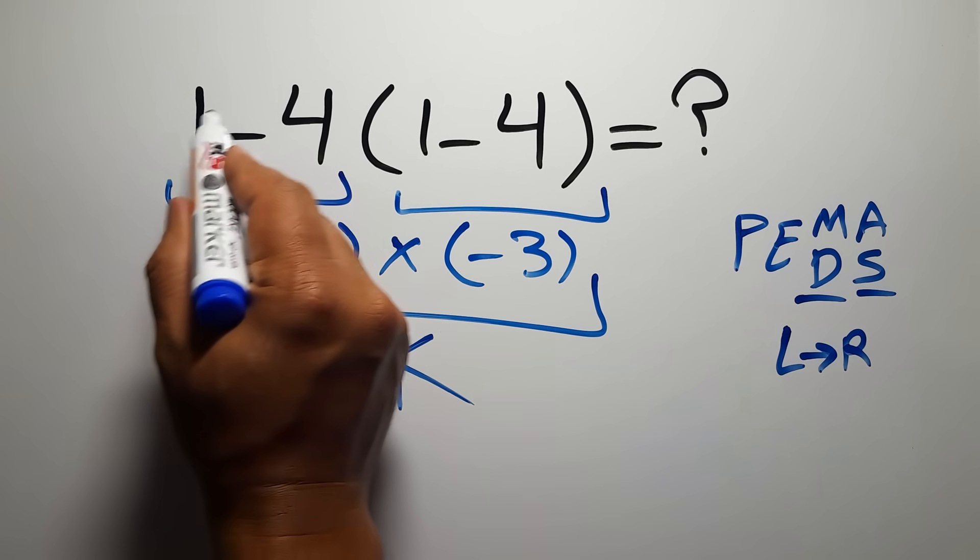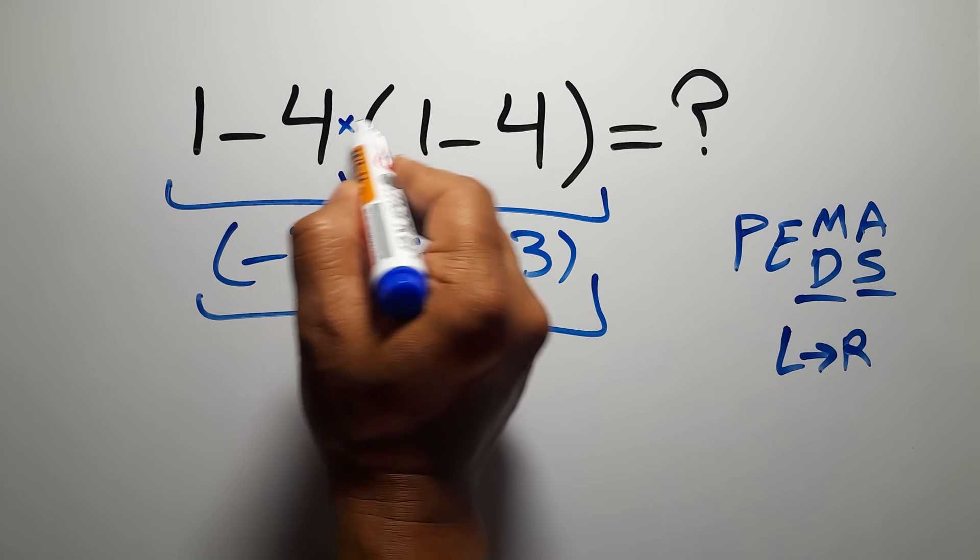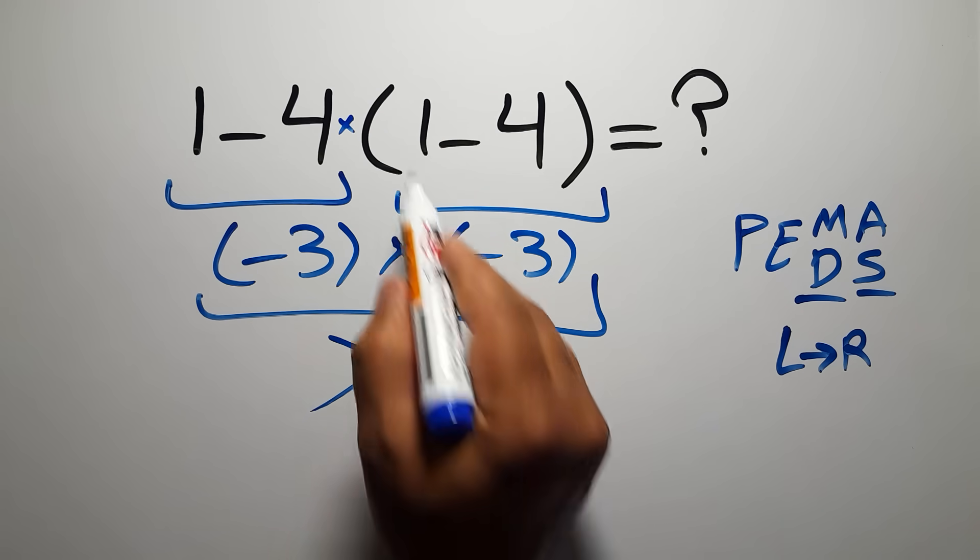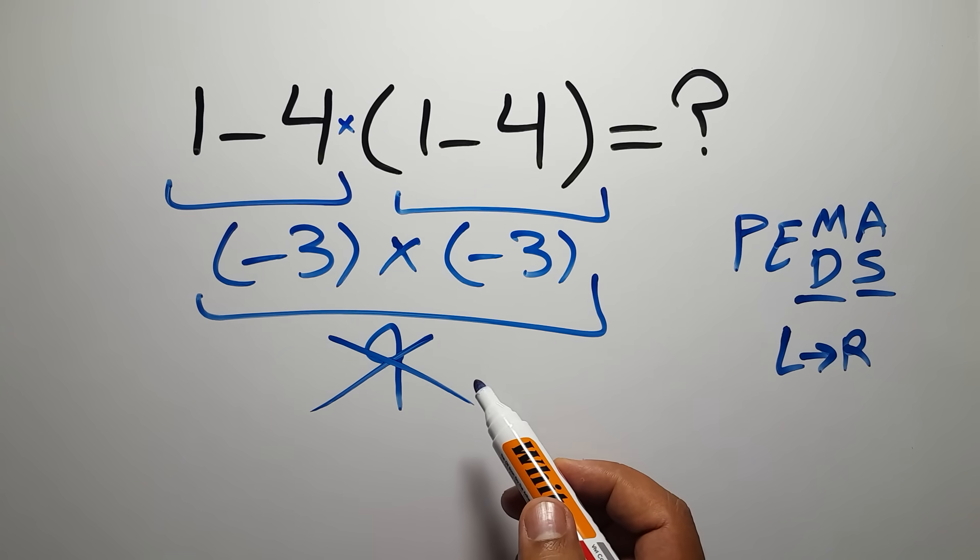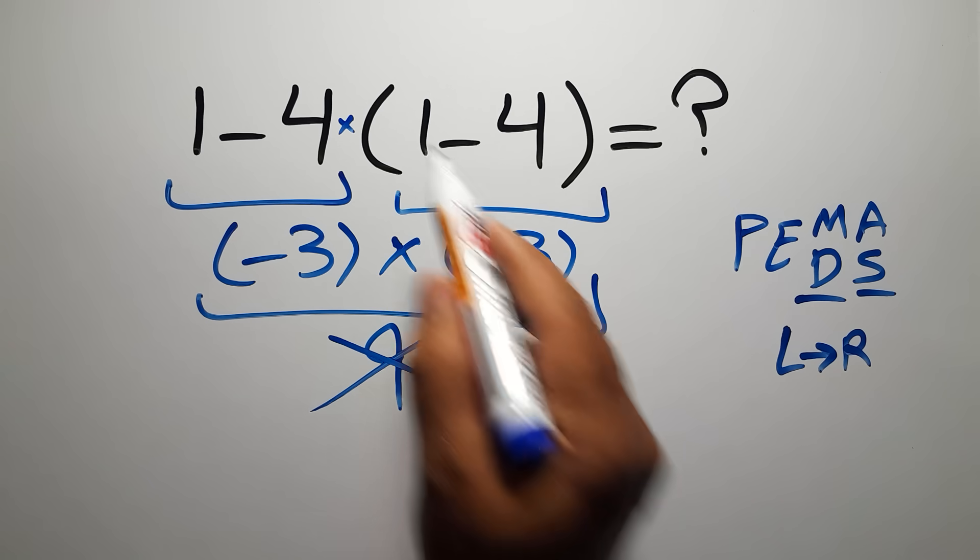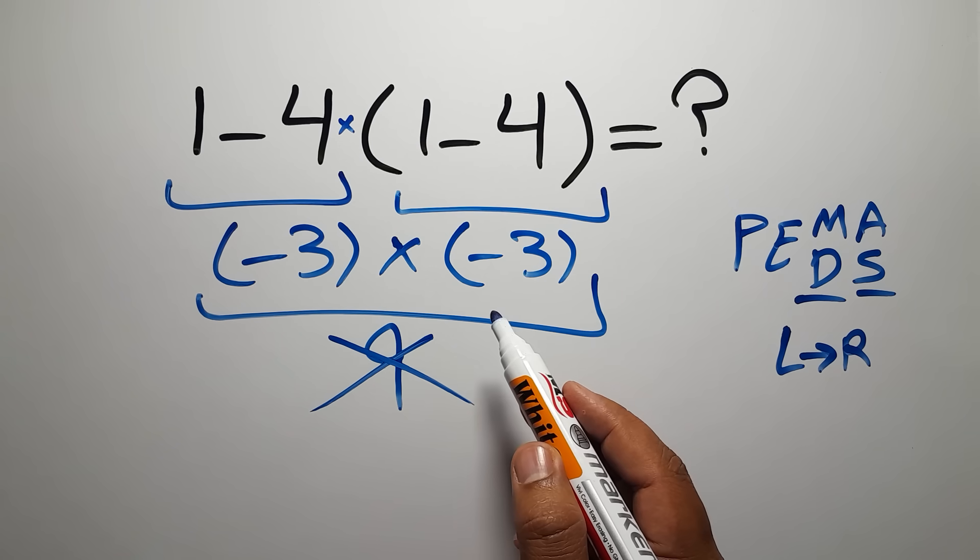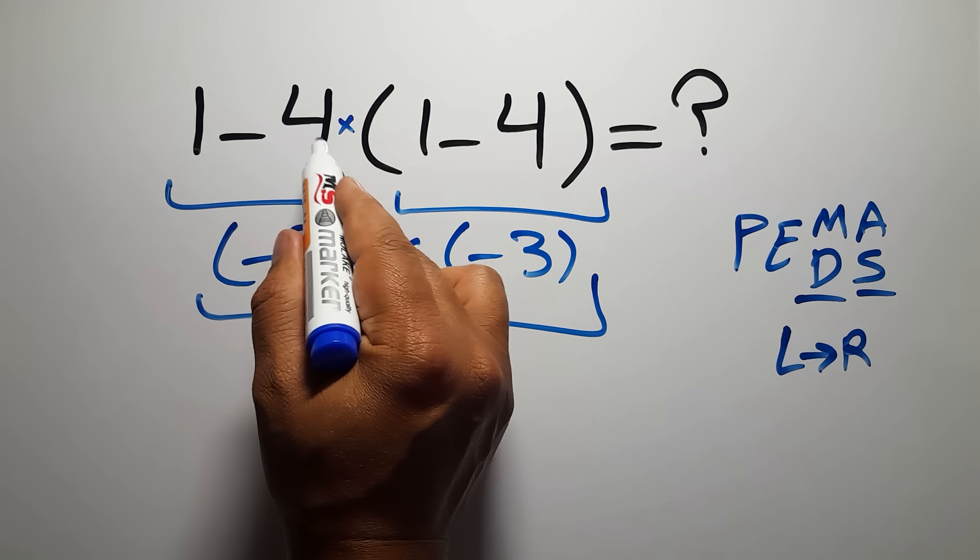In this expression we have 1 subtraction, 1 multiplication, and 1 parentheses. Inside this parentheses we have 1 subtraction. According to PEMDAS, first we have to do this parentheses, and after this parentheses we have 1 subtraction and 1 multiplication.